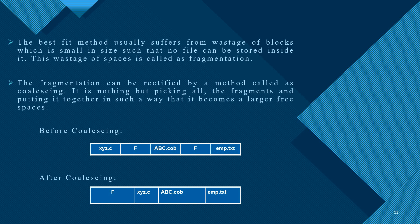Fragmentation occurs when there is wastage of memory space. For example, files x, y, z may leave free spaces in two partitions. Coalescing means combining all the empty spaces together to create a larger free space that can be allocated to other files. For example, if there are 2 memory partitions and a file cannot be loaded in either partition individually, combining them gives a larger free space where a new file can be stored.